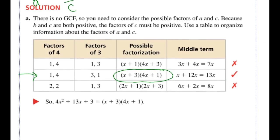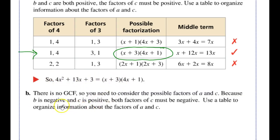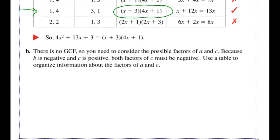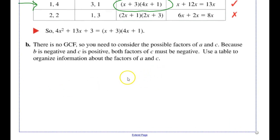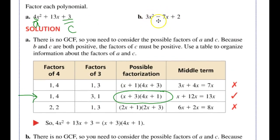Now let's look at part b. Again, I first check if there's a common term I can factor out of all terms — there isn't. So I continue with factoring using a table. I also notice there's a negative sign, and since c is positive, both factors of c must be negative, because a negative times a negative gives a positive, but a negative plus a negative still gives a negative middle term. I need to keep that in mind.